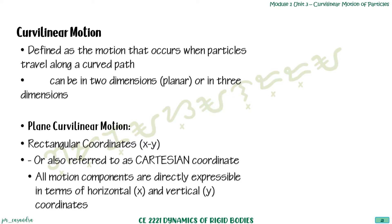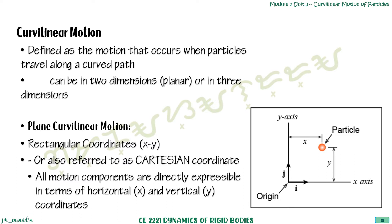All motions in a plane curvilinear motion will have coordinates directly expressible in terms of the horizontal x and vertical y coordinate system. From the figure, from the origin, the particle can be defined through its position along the x-axis and its position along the y-axis.